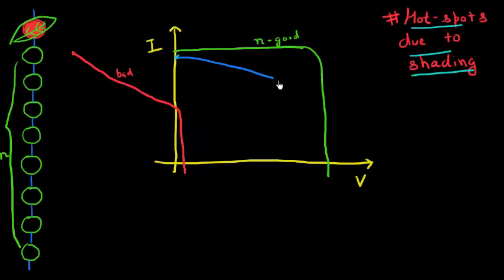And the overall IV characteristics can look something like this, where it would essentially result in an overall IV characteristics like this. So since this cell is in series, it adds up a little to the VOC. But in most of this region, the current is limited by this bad cell. And also this bad cell is being driven into reverse bias. So it's very important to understand is that this bad cell is being driven into reverse bias.